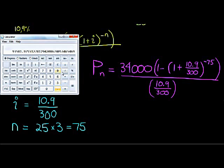Let's go and calculate the value of the loan he can get. We have 34,000 times, in the bracket, 1 minus, in brackets, (1 plus 10.9 divided by 300), close that bracket, and that bracket has an exponent of negative 75. Close that bracket once again, and all of this gets divided by 10.9 divided by 300.